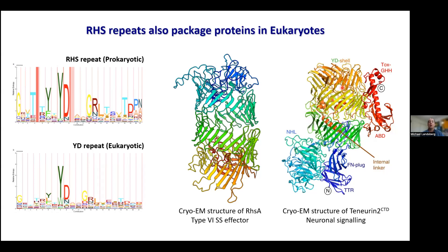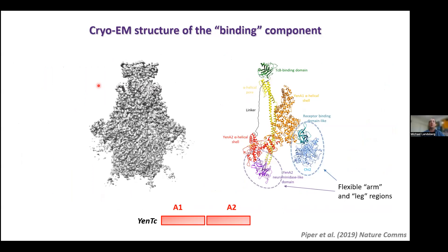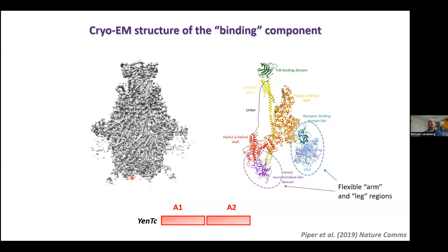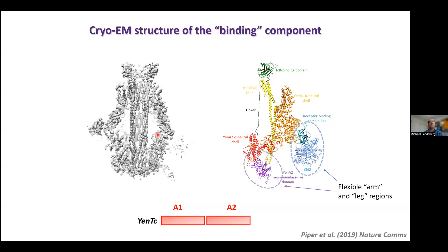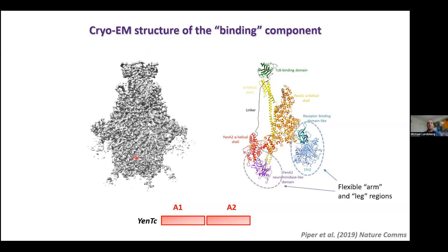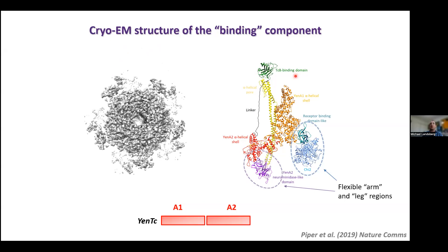Now coming back to ABC toxins: the NBC structure was the active component; this is the structure of the binding component. This is a cryoEM structure from data collected by Lou Breault, a PhD student in my lab, with structure determination and interpretation done by Sarah Piper, also previously a PhD student in my lab. The cryoEM map has a resolution of around 4.4 Ångströms — not particularly impressive by today's standards but sufficient to build an atomic model. This is a co-complex of two TCA-like proteins, YenA1 and YenA2, with some very flexible regions.